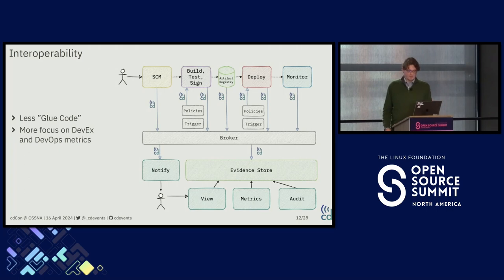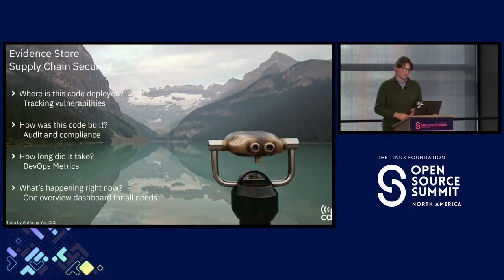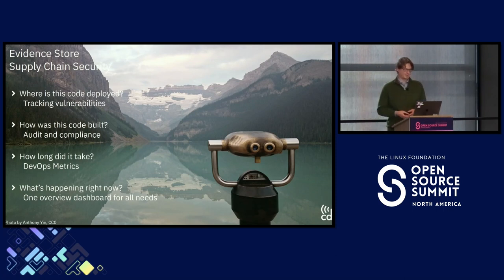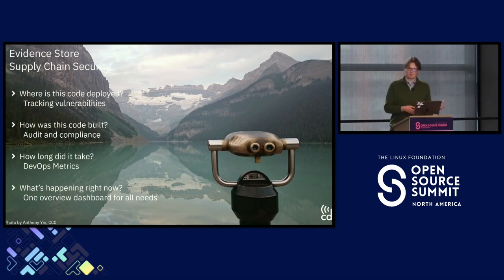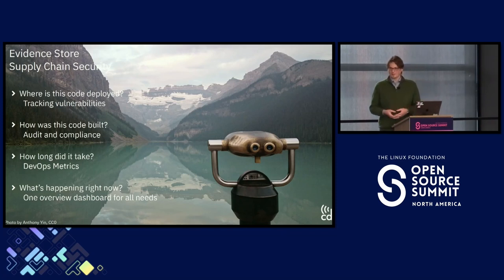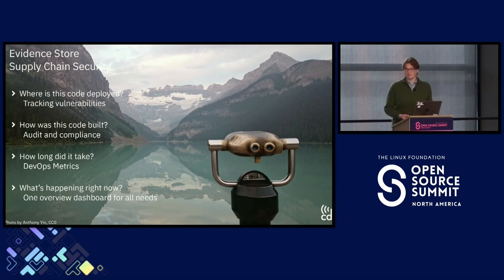With all these tools working together for interoperability, you can also collect events into what we call an evidence store, and build services on top of that. This is key for supply chain security features, which is a very important focus these days. If you want to answer questions like 'where is this piece of code deployed?' — critical when a new vulnerability is announced — having all the data in your evidence store lets you answer those questions. You can audit how a piece of code was built, and use the data to build DevOps metrics that tell you how long your workflow takes, where it's going slow, and where there are issues.